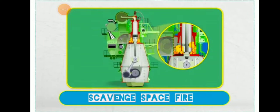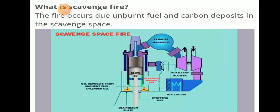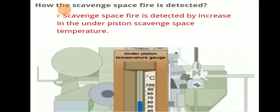Today we will be discussing scavenge space fire — what are the indications and what actions need to be taken. Scavenge fire is a fire that occurs due to unburnt fuel and carbon deposits in the scavenge space. Oil deposits from unburnt fuel and carbon deposits accumulate there, and when fire occurs due to this, it is known as scavenge fire.